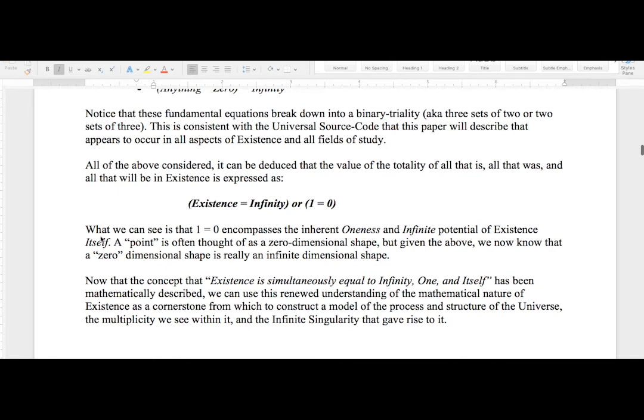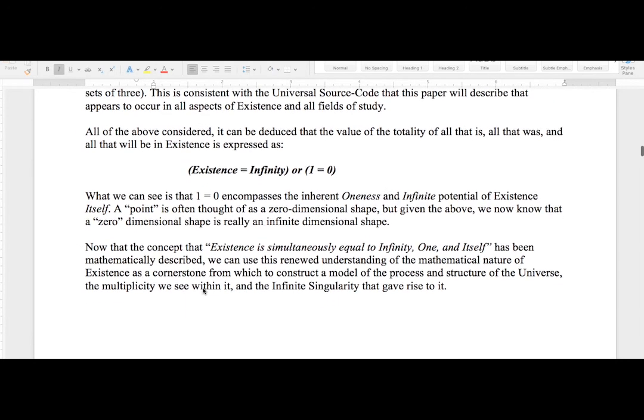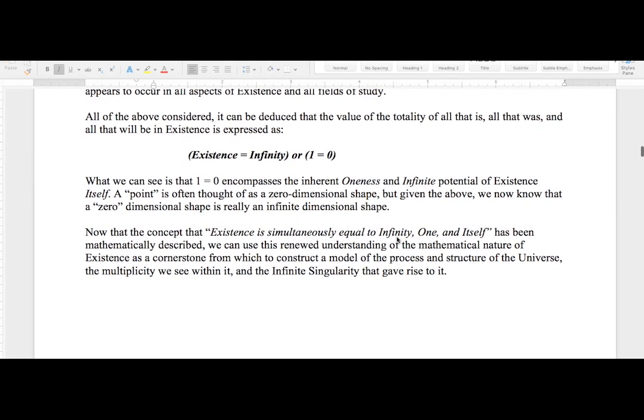A point is often thought of as a zero-dimensional shape, but given the above, we now know that a zero-dimensional shape is really an infinite-dimensional shape. Now that the concept that existence is simultaneously equal to infinity, one, and itself has been mathematically described, we can use this renewed understanding of the mathematical nature of existence as a cornerstone from which to construct a model of the process and structure of the universe, the multiplicity we see within it, and the infinite singularity that gave rise to it.